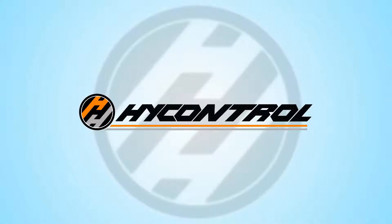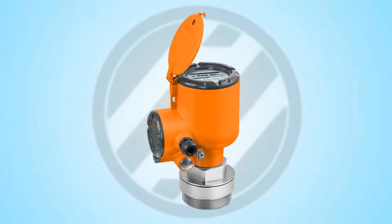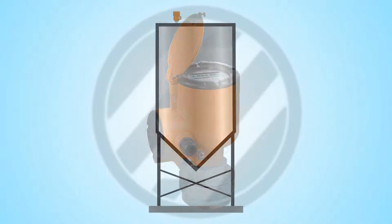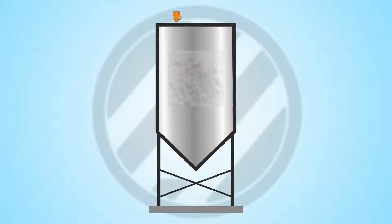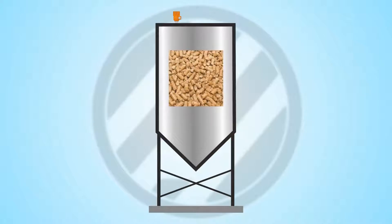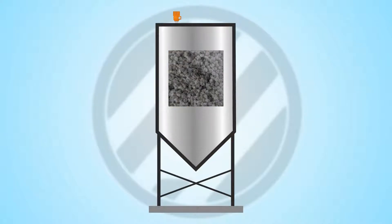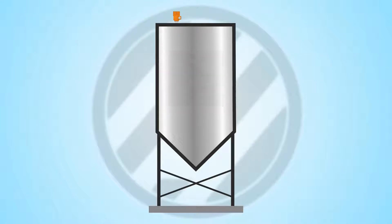We're going to look at installing and programming a high control radar level measurement transmitter on a standard silo holding a solid product. This solid product could be in the form of a powder, pellets, flakes, or granules. Different types of products will have properties that we will need to consider during the programming stage.